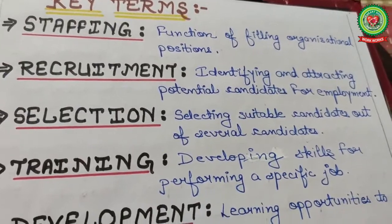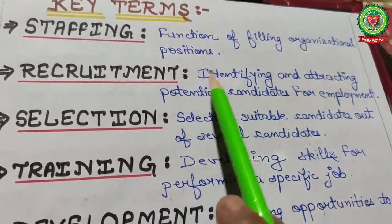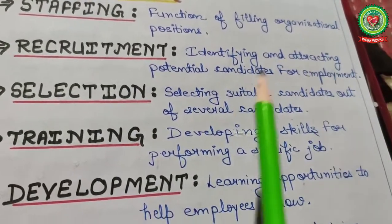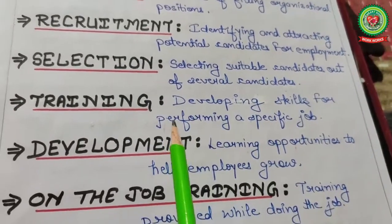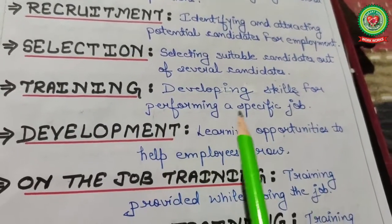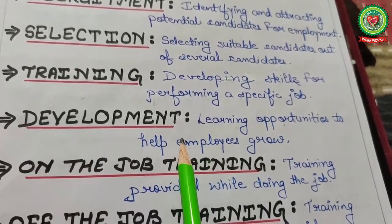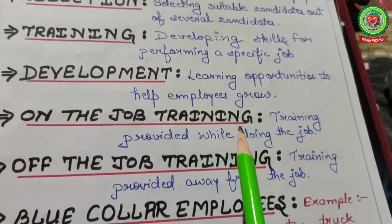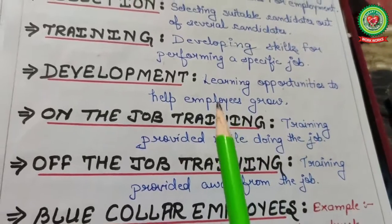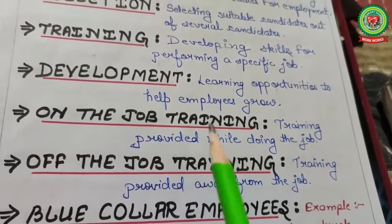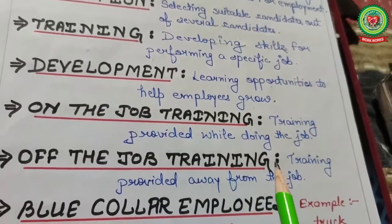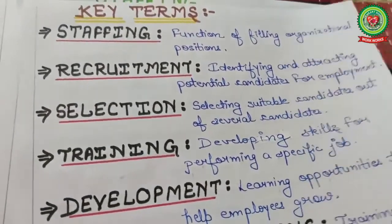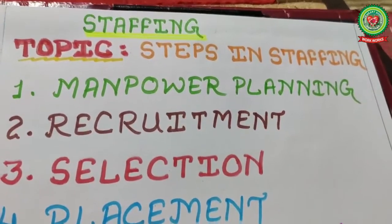Key terms for review: Staffing means filling the organizational positions. Recruitment means identifying and attracting potential candidates for employment. Selection means choosing the candidates. Training means developing skills for performing a specific job. Development means learning opportunities to help employees grow. On-the-job training means training provided within the organization alongside work. Off-the-job training means training provided away from the job.